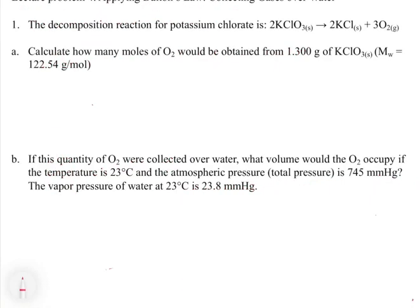This lecture problem involves the decomposition of potassium chlorate. It asks us to calculate how many moles of O₂ would be obtained from 1.300 grams of KClO₃. This breaks up a stoichiometry question with gases. The first part asks us to go from the mass of KClO₃ to the moles of O₂. We'll first convert mass to moles of KClO₃ using molecular weight, then use the mole ratio of KClO₃ to O₂ from the balanced equation.